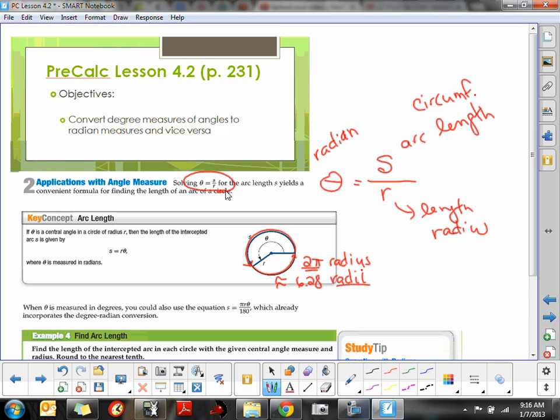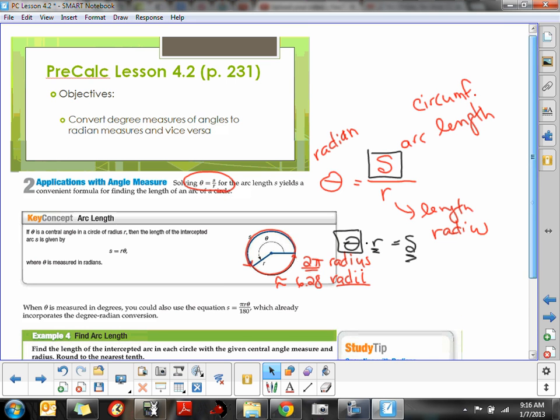So if we were to take this equation and solve it for S, and that's what they do down below here, if you solve this equation for S, we can always calculate the arc length by taking your angle, which is in radians, times the length of the radius. So this tells us how many radii it took. Multiply it times the length of the radius should give us our arc length. So we're going to use that in our next example here.